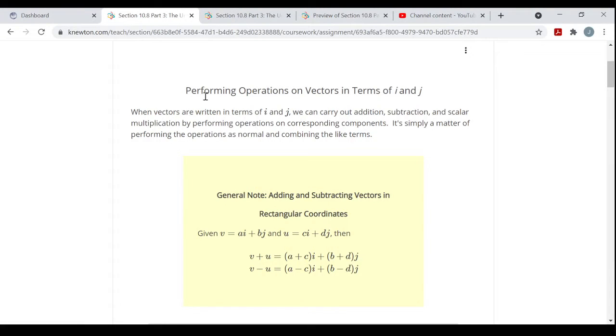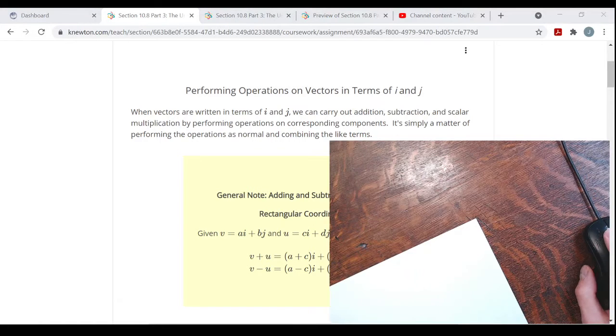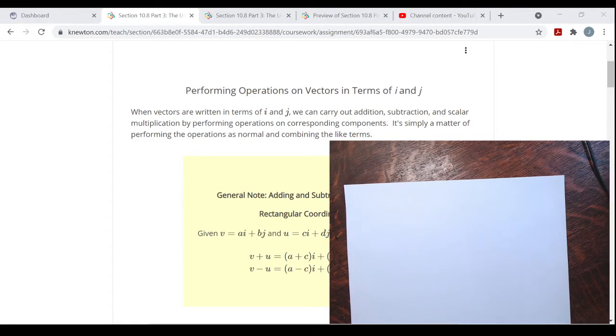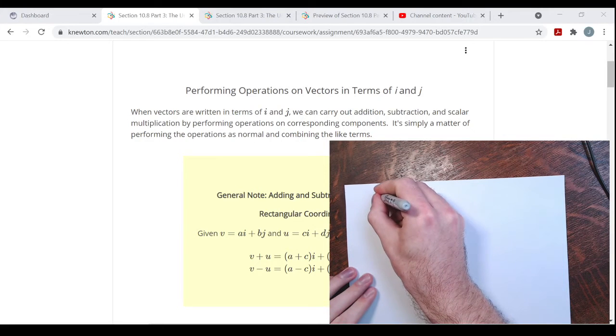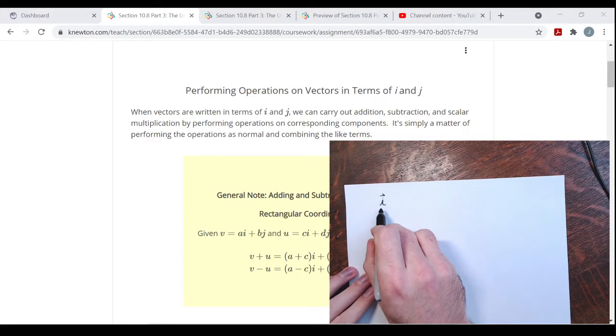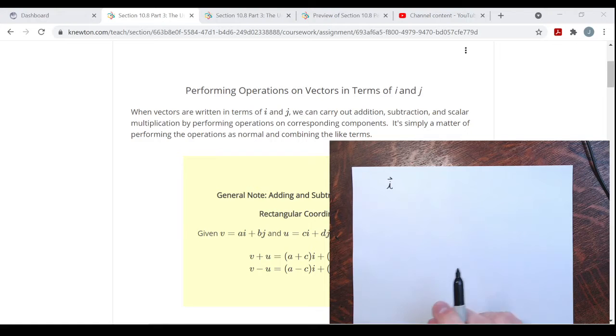Here, performing operations on vectors in terms of i and j. I'll actually write this up right now to refresh your memory if you have or haven't seen it yet. Vector i, not the number i—some people often confuse this. Don't confuse this with the number i, the square root of negative one. It's not that.